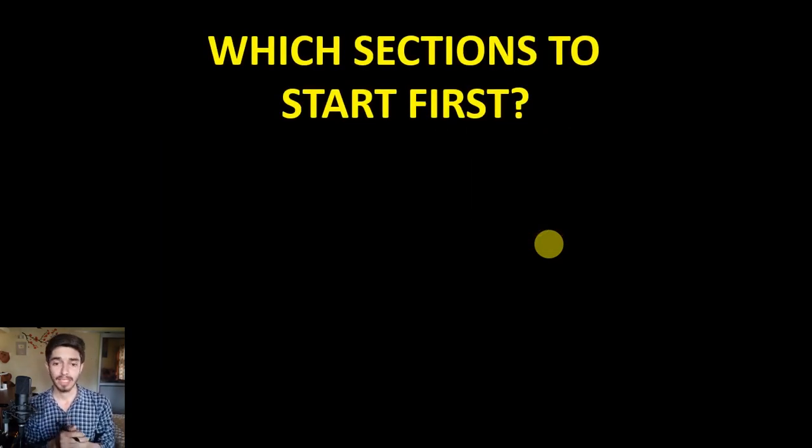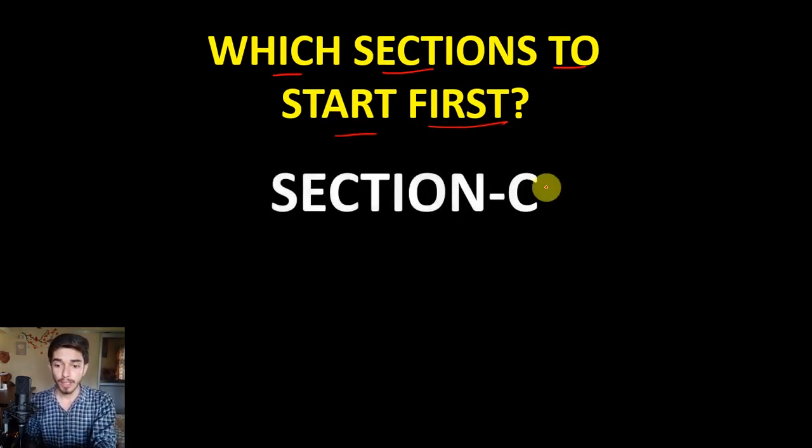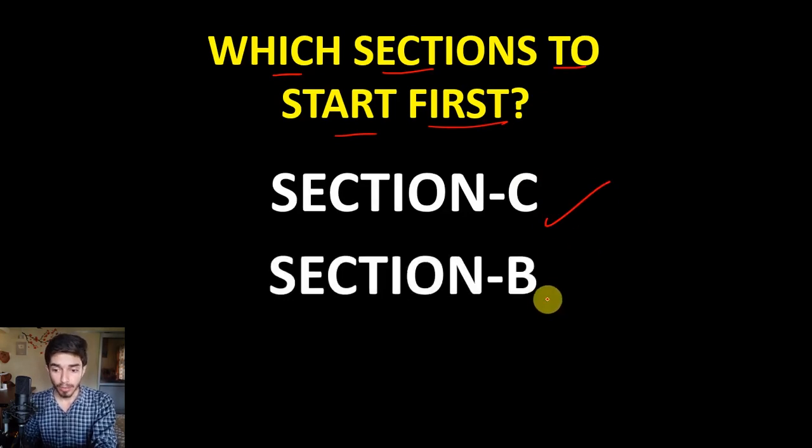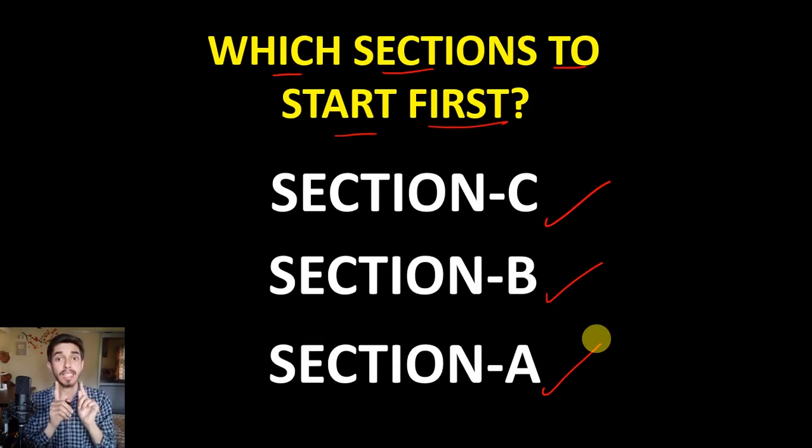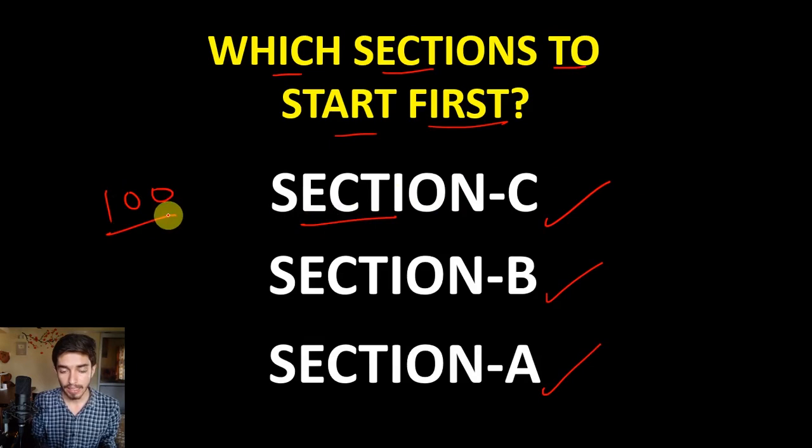Now a really important question is: which sections to start first? This simple decision can make the difference between you clearing CSIR-NET exam and not clearing it. The order in which you have to attempt sections is: first complete Section C, then go for Section B, and then attempt Section A. Section C covers 100 marks, which is half of the total marks, so this section is really important.